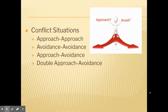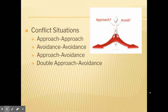Finally, we have a double approach-avoidance conflict situation. That's when we have two potential outcomes and in both of them we don't know whether the situation will be good or bad. For example, should I stay home and talk to my significant other on FaceTime — which will be good for the relationship but may damage my friendship — or should I go to that party and have a better time with friends but possibly upset my significant other?